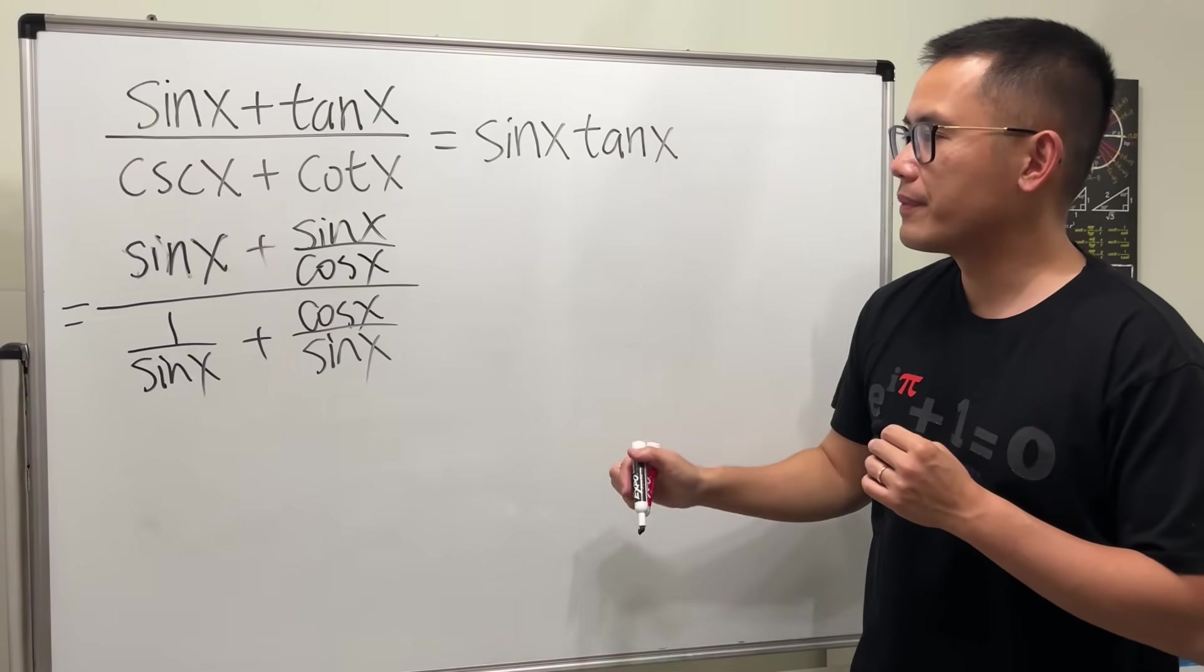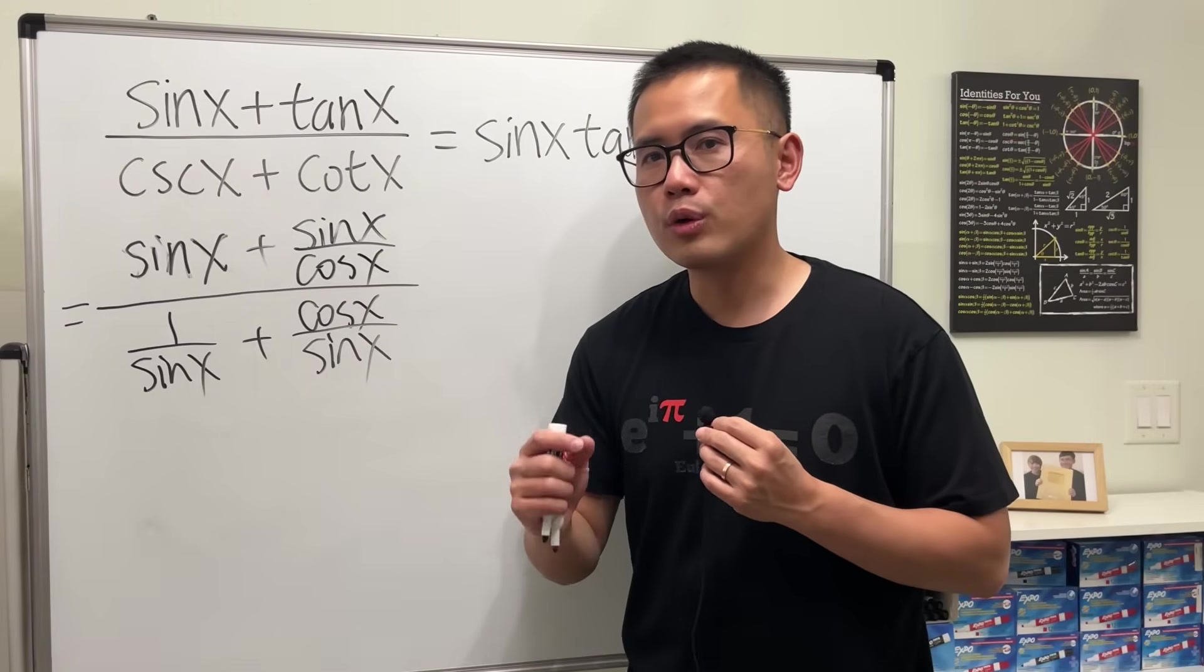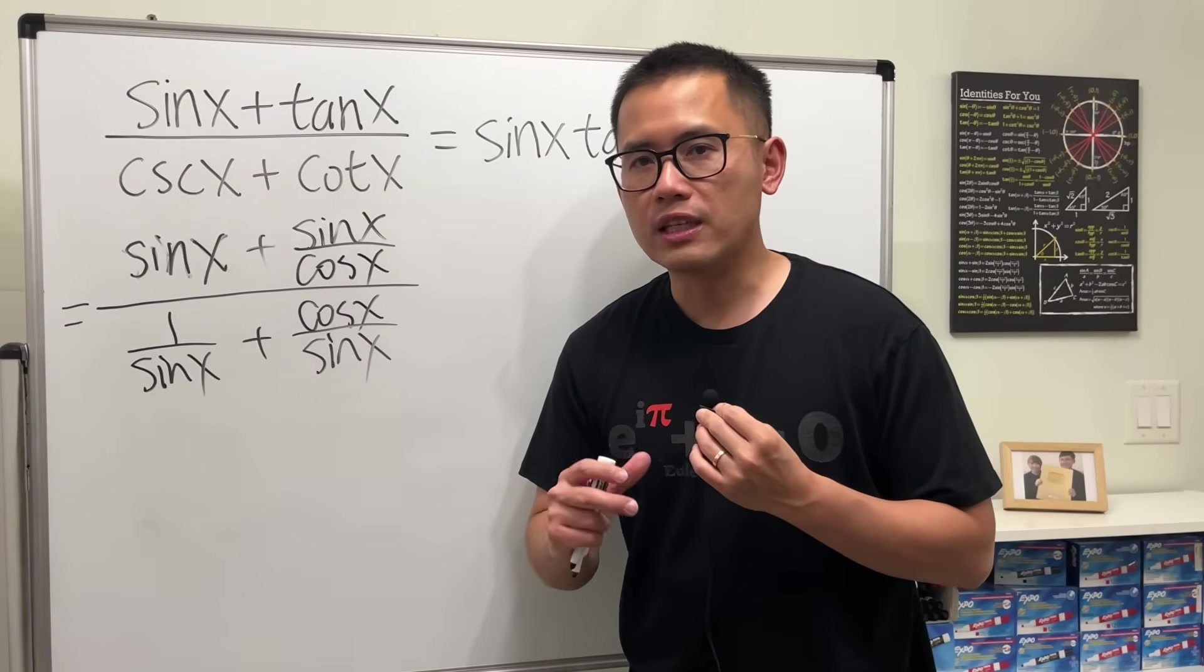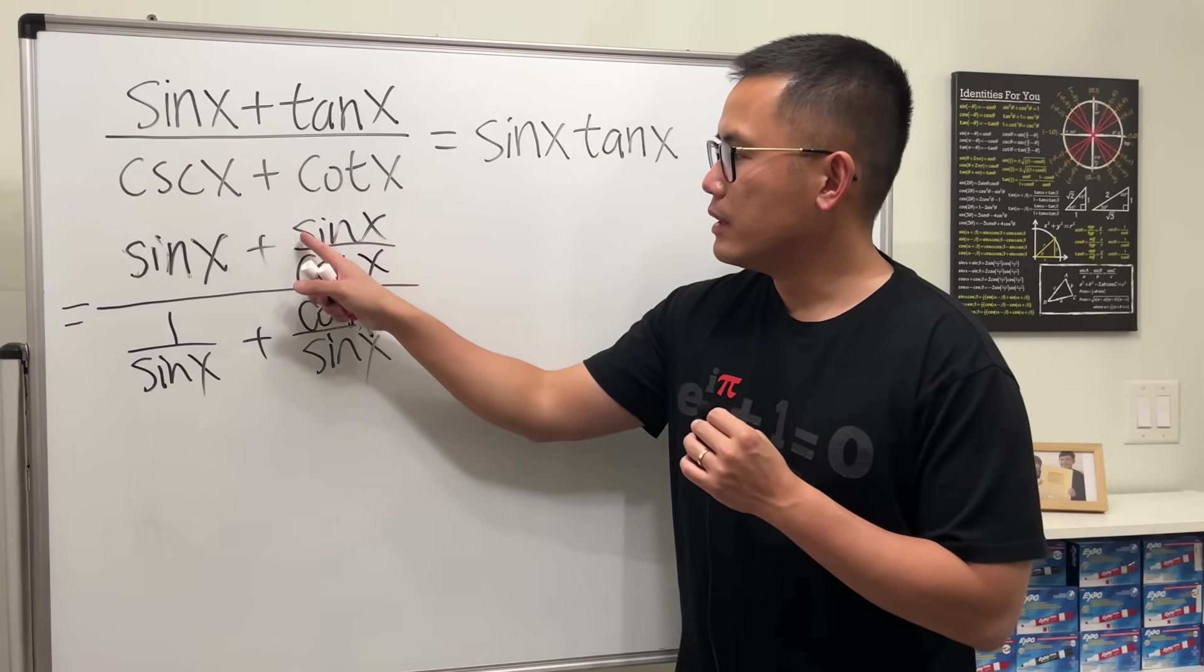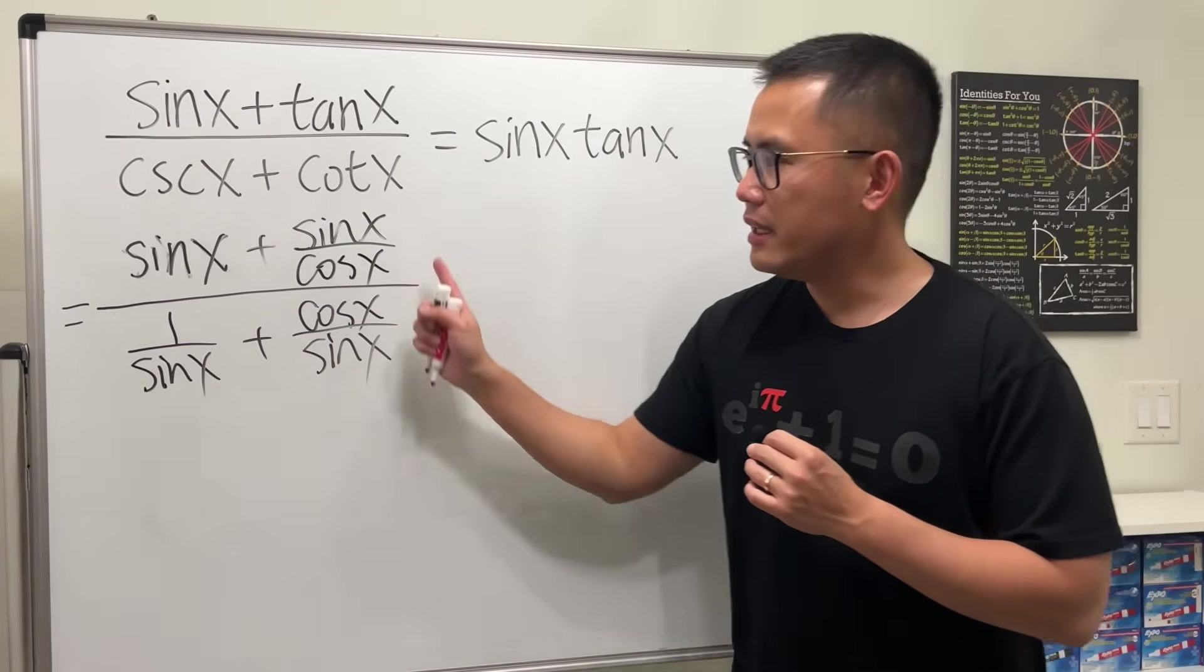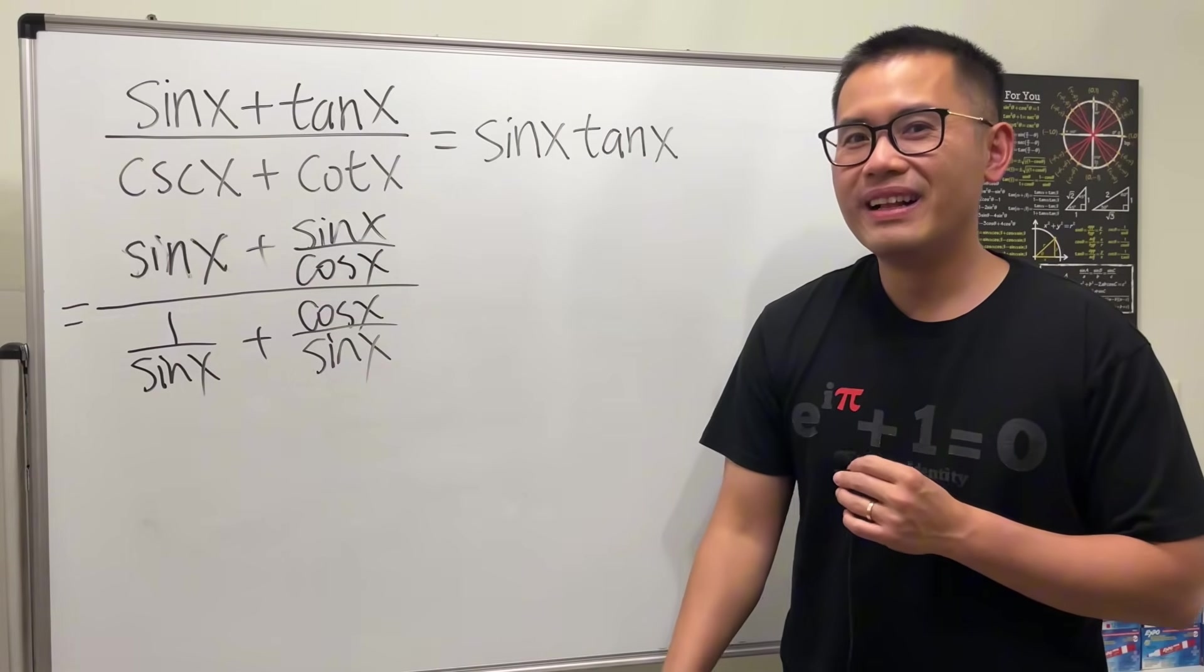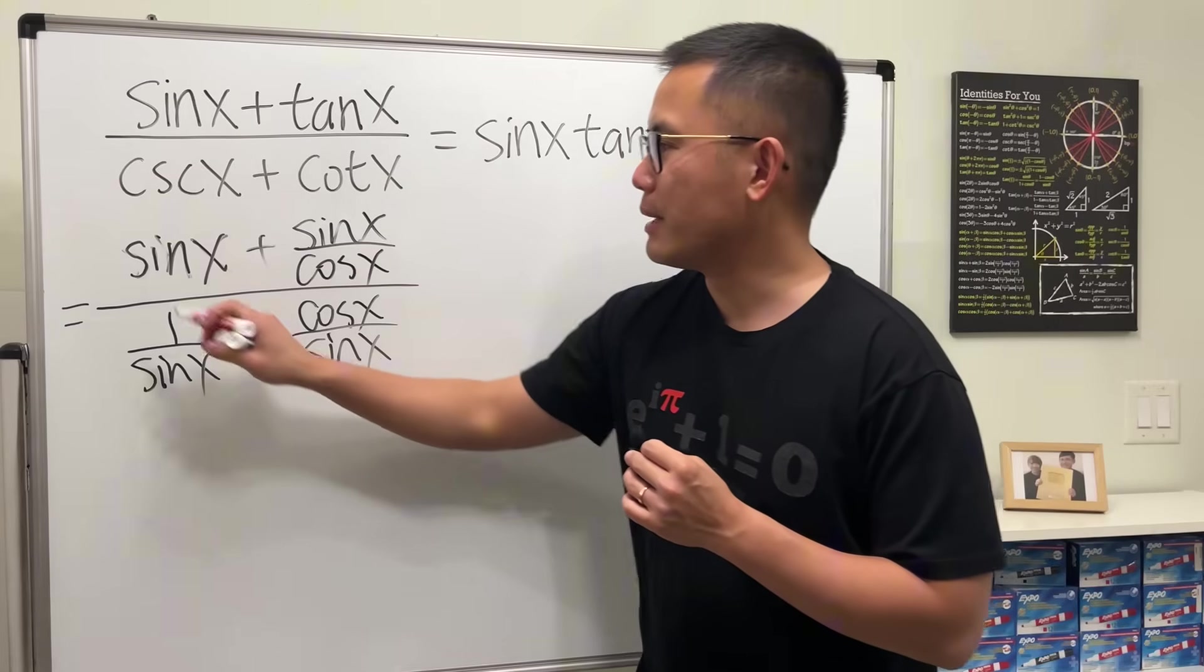Now, how do we do this? We have a so-called complex fraction, or sometimes it's called a compound fraction, meaning we have small fractions inside a big one. To simplify this, you can multiply the top and bottom by the lowest common denominator of the small fractions.